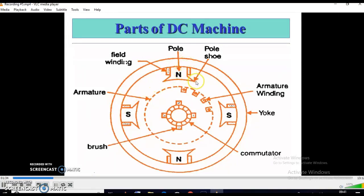This is the pole shoe. It supports the field winding, and spreads the flux around the armature periphery uniformly.